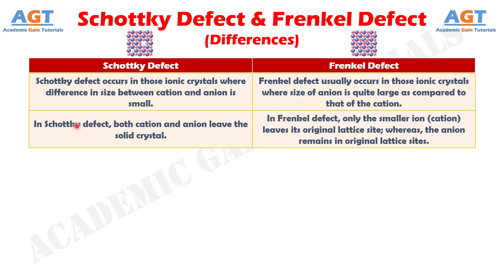Number 2: In Schottky defect, both cation and anion leave the solid crystal, whereas in Frenkel defect, only the smaller ion, or cation, leaves its original lattice site, whereas the anion remains at its original lattice site.